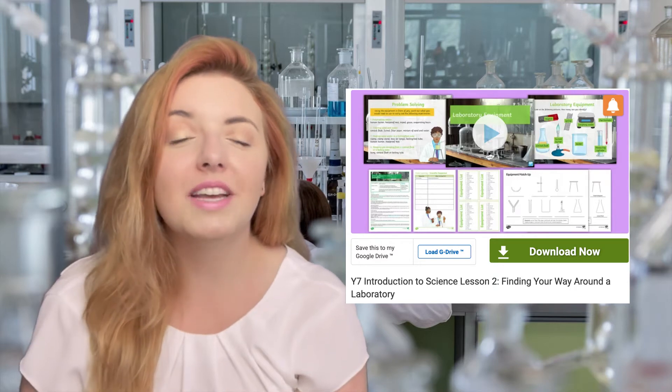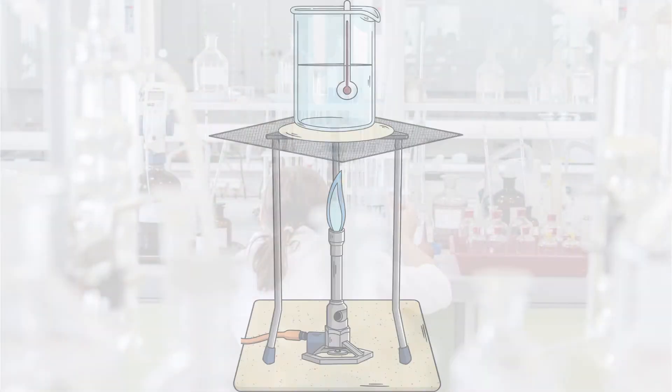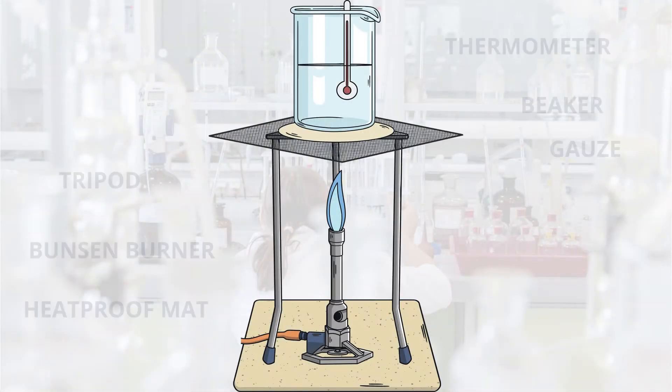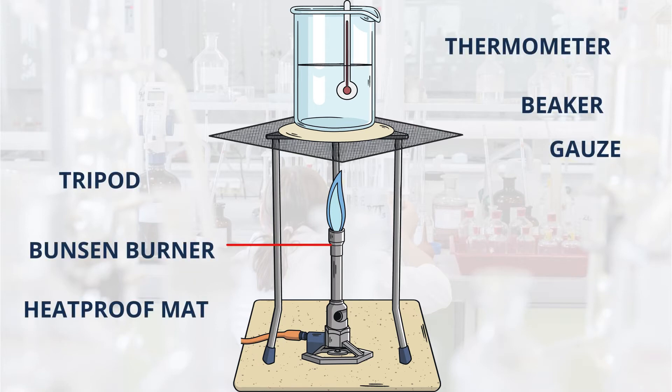Now it's time to look at a practical. If we wanted to see how fast water boils, we would need six pieces of equipment set up like this. As you can see we have a Bunsen burner, a heat proof mat, thermometer, gauze, tripod and beaker.